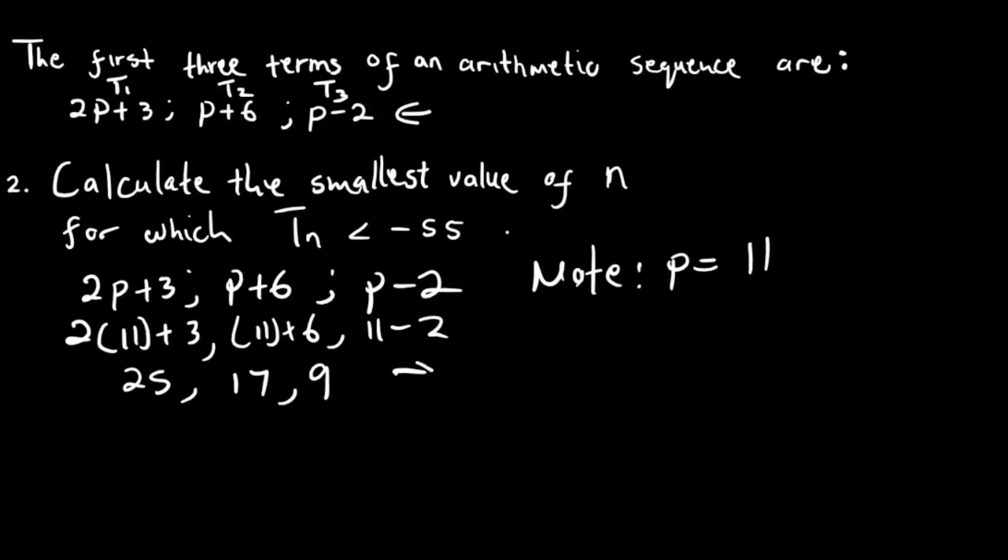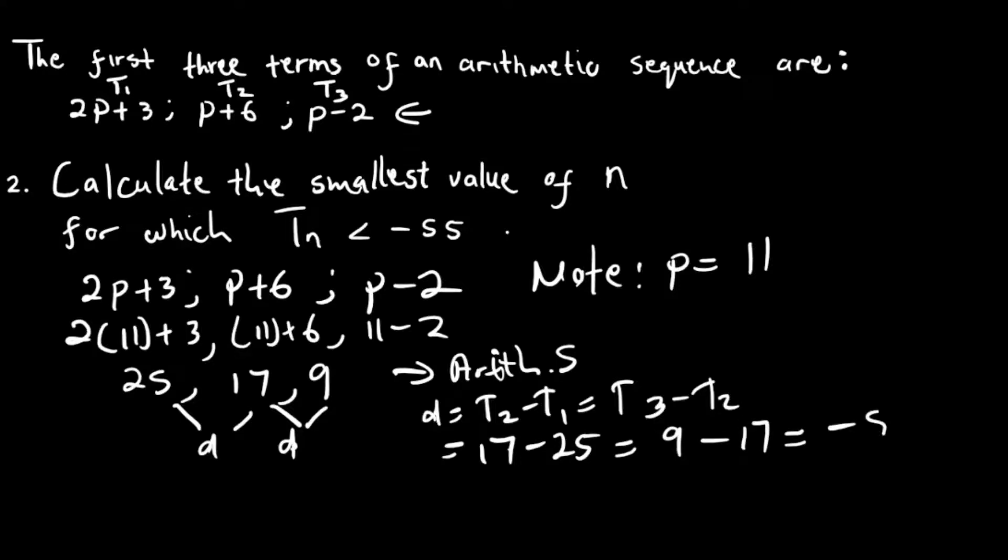So because this is an arithmetic sequence, then the difference must be constant. The same d. So let's calculate d. So d is equal to t2 minus t1 is equal to t3 minus t2. So if you calculate here, you're going to have t2 is 17, minus 25 is equal to t3, which is 9, minus 17. It will all give you minus 8.